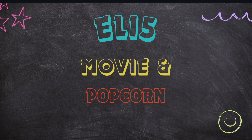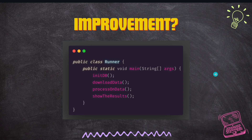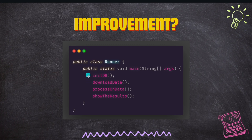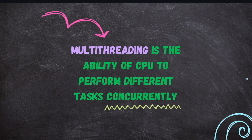If you follow line-by-line execution of tasks in your program, this kind of freezing situation may arise if there is a task which takes longer time to execute. So looking at the improvement: we have initDB, then download data, then process the data, then show the results. Downloading the data is something which could take a major chunk of time. What we can do is put the download data call in another thread and everything else in another thread — enabling parallel processing. It will ensure that while we are waiting for downloading the data, everything else is not getting frozen. This is the improvement we can achieve by the virtue of multithreading. To give a formal definition: multithreading is the ability of the CPU to perform different tasks concurrently.